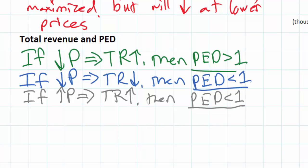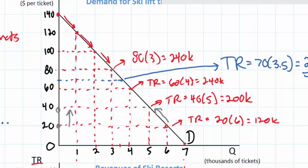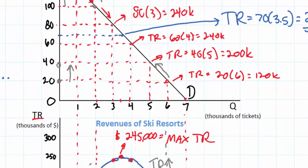However, what if demand is elastic and price goes up? For example, if we go from a price of $100 to a price of $120, such as we see here, we move this way, then total revenue is going to go down because demand is elastic.